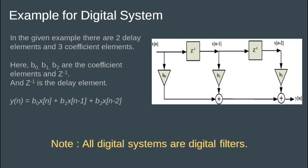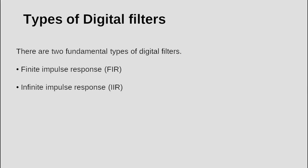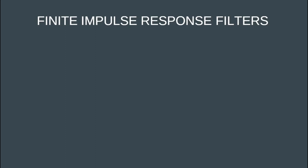We can note that all digital systems are digital filters. Now let's discuss the types of digital filters. There are two fundamental types: finite impulse response filter and infinite impulse response filter. In this video, let's focus on finite impulse response filters.